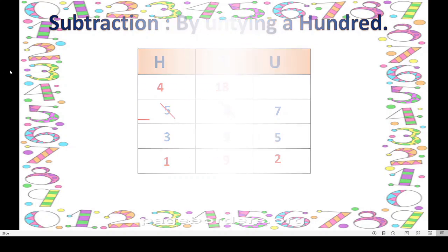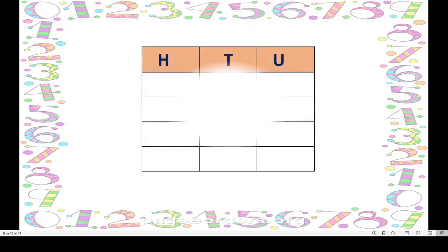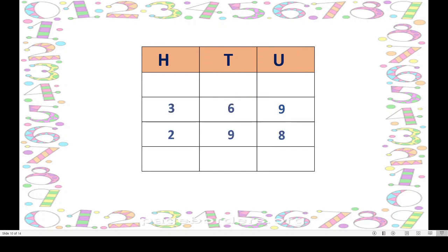Next: 369 minus 298. Here 9 minus 8 — very easy, that is 1. Then 6 minus 9 — not possible, so it borrows from 100. The 3 in the hundreds unties into 2 and 1. That 1 moves to the tens place, making 16 tens. And here it becomes 2 hundreds. So 16 minus 9 equals 7. And 2 minus 2 equals 0. The answer is 71. No hundreds are left, so it is 0.